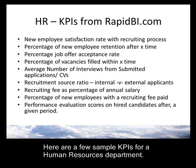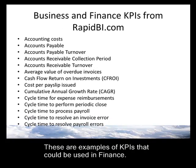These are examples of KPIs that could be used in a human resources department, from rapidBI.com — BI stands for business intelligence. Some KPIs for HR are new employee satisfaction rate with the recruiting process, or percentage of new employee retention after six months. These are measures of success for the HR function. For finance, KPI examples include accounts payable turnover and cycle time for expense reimbursements — all quantifiable things you can measure.